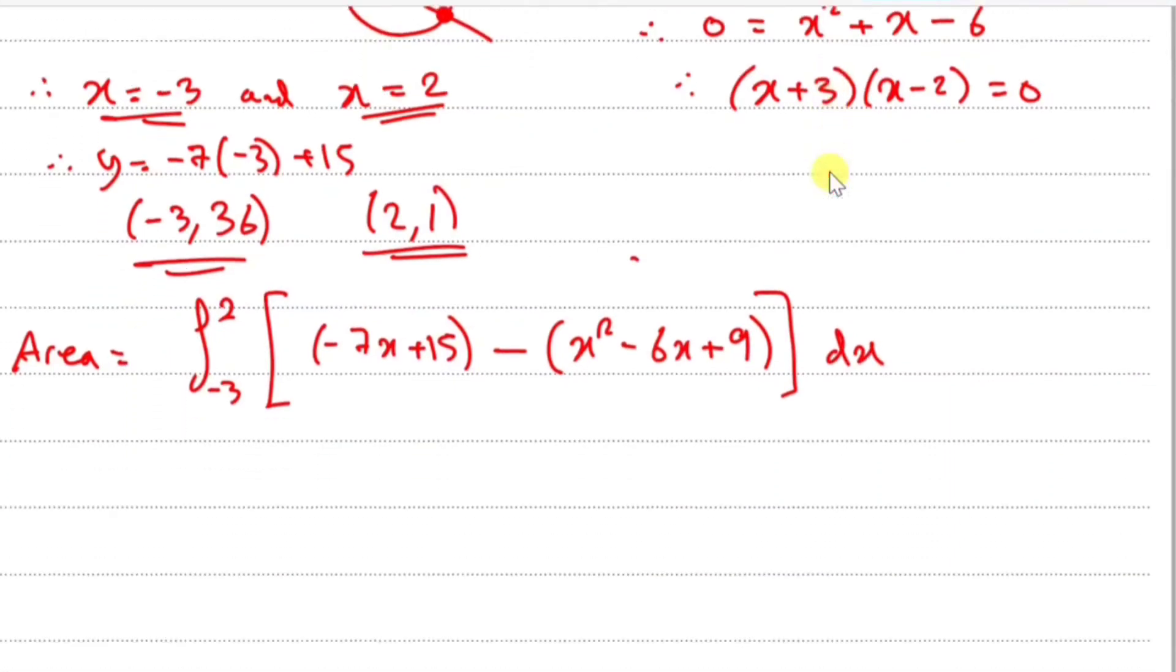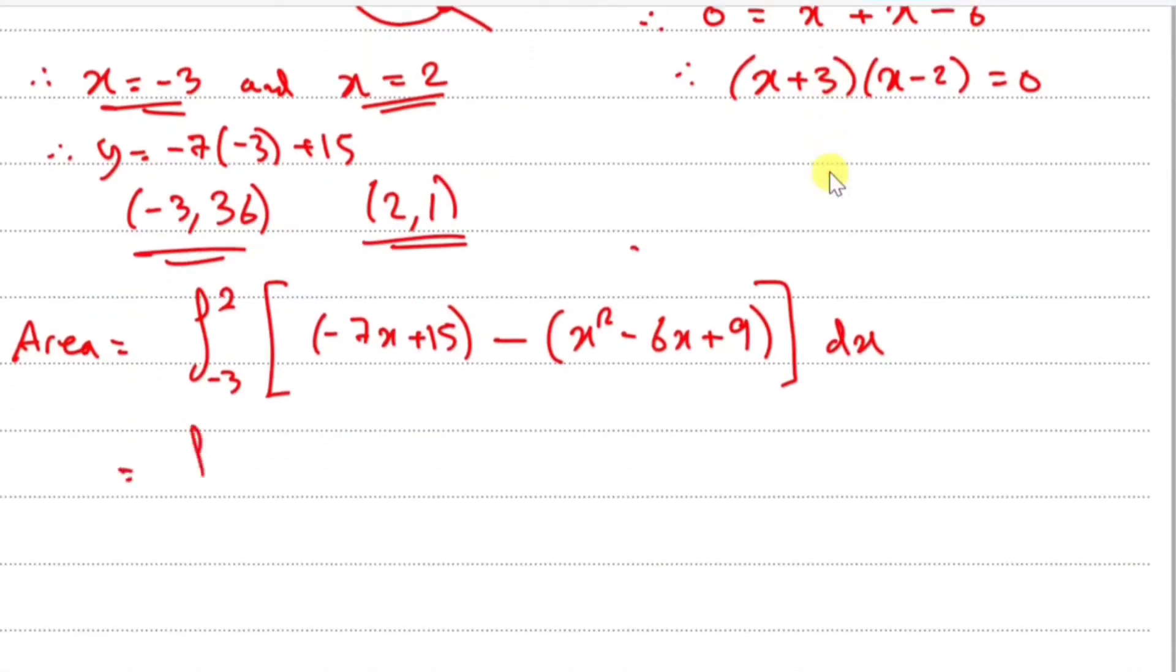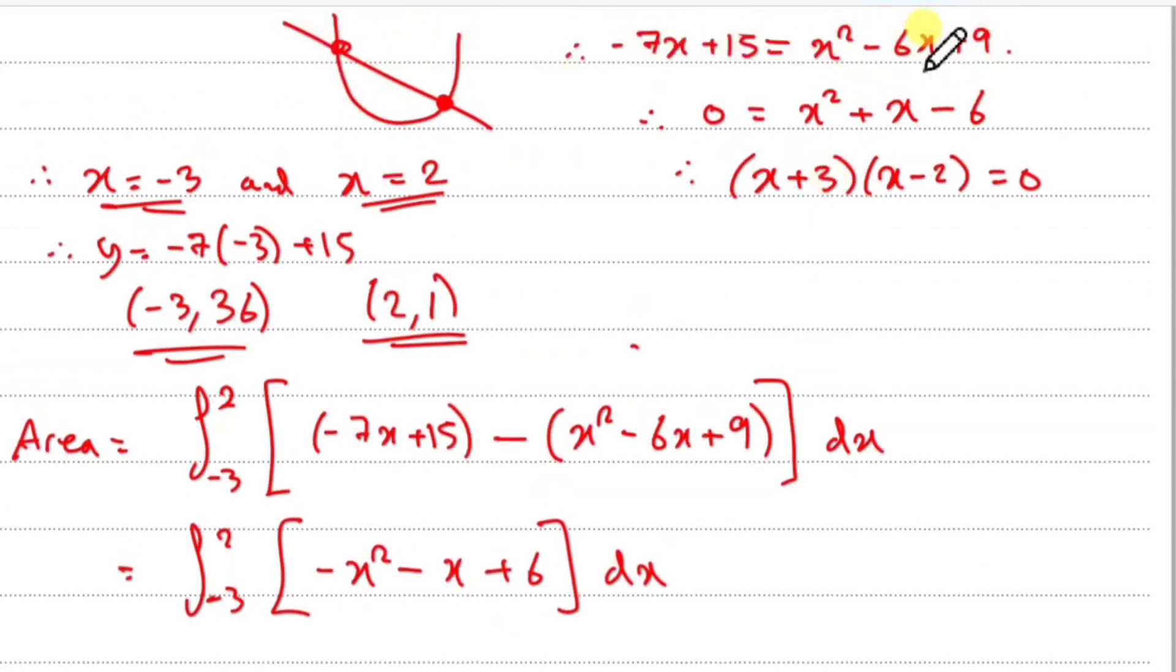Tidying this up, integral from -3 to 2. You should get -x² - x + 6. That's literally the opposite of what we did up there. And then dx.